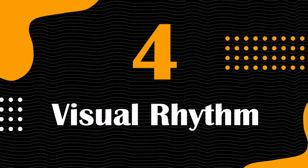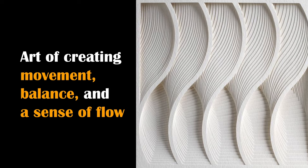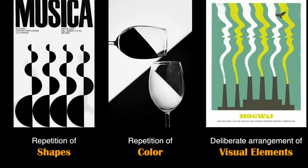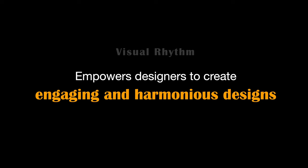Next up is Visual Rhythm. Visual Rhythm in design is like a carefully orchestrated dance of elements on the canvas — the art of creating movement, balance and a sense of flow within your composition. Whether through the repetition of shapes, colors or the deliberate arrangement of visual elements, visual rhythm adds a beat to your design that captures the viewer's attention and guides their gaze. Just like in music, it can be fast and energetic or slow and calming, allowing you to convey different moods and messages in your visuals.